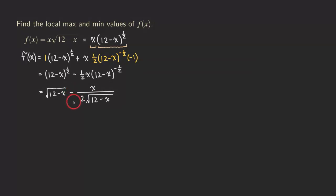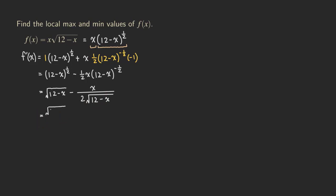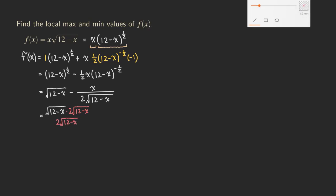In order to find the critical numbers, it would be a good idea to get the common denominator so that we get a single fraction. So we are going to multiply the first term by 2 times the radical of 12 minus x over 2 times the square root of 12 minus x, and then we still have the second fraction with x over 2 times the square root of 12 minus x.